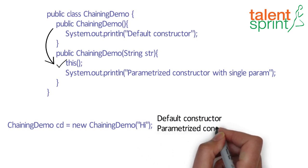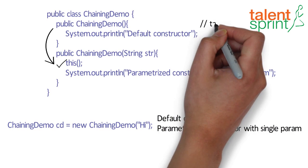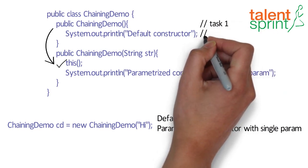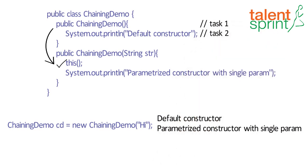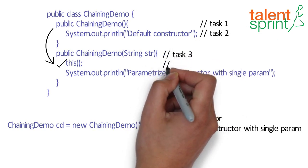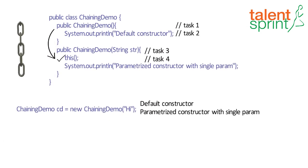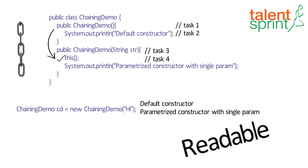This process is used when we want to perform multiple tasks in a single constructor. So rather than creating code for each task in one constructor, we create separate constructors for each task and make their chain, which makes the program more readable.